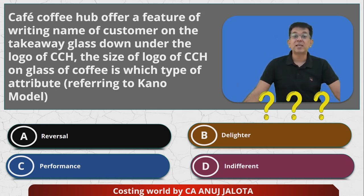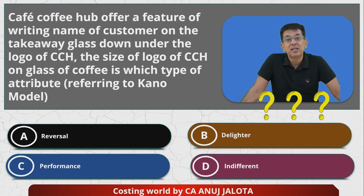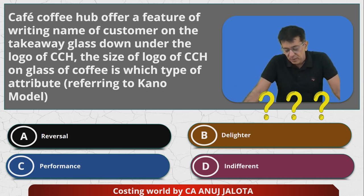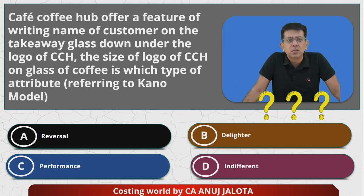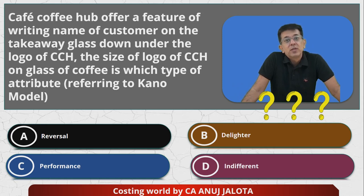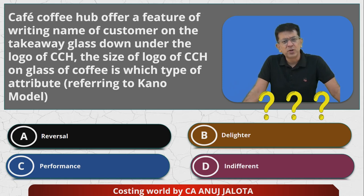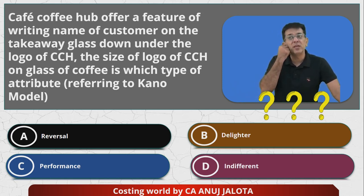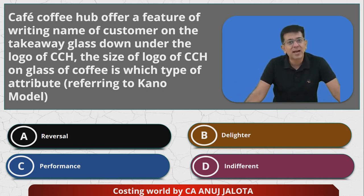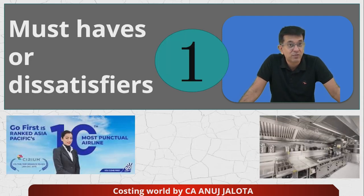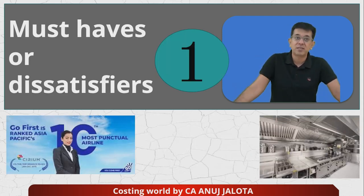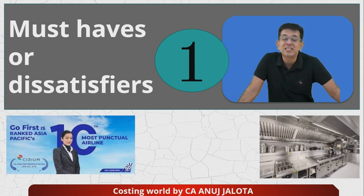The Kano model was made by Professor Kano in the year 1980. This model tells you what attributes a customer values, what he does not value, what he is indifferent to, and what should be in a product for him to buy it. There were five attributes that Professor Kano identified.